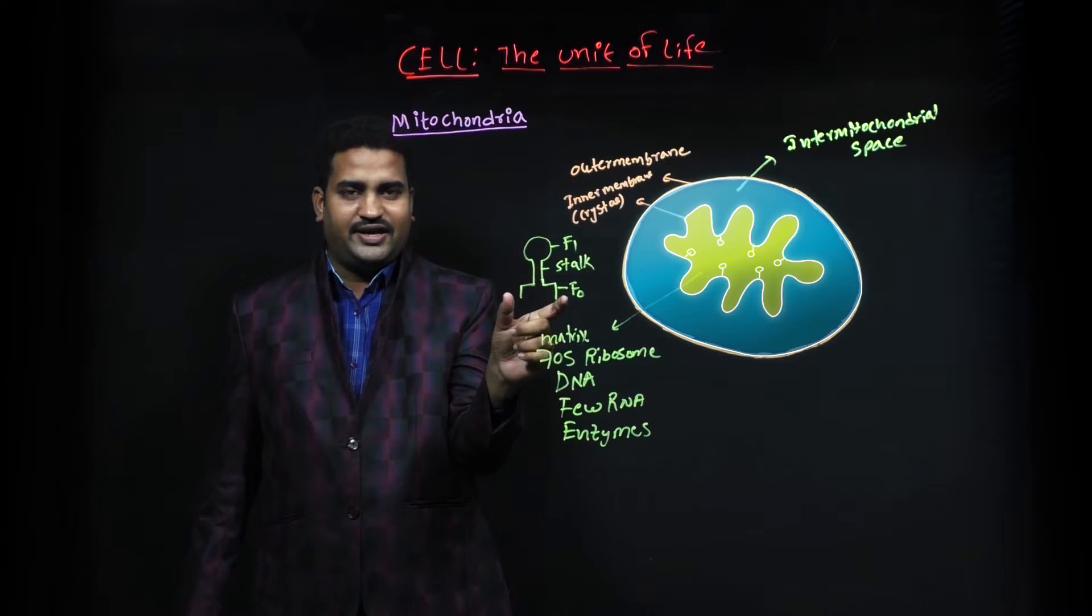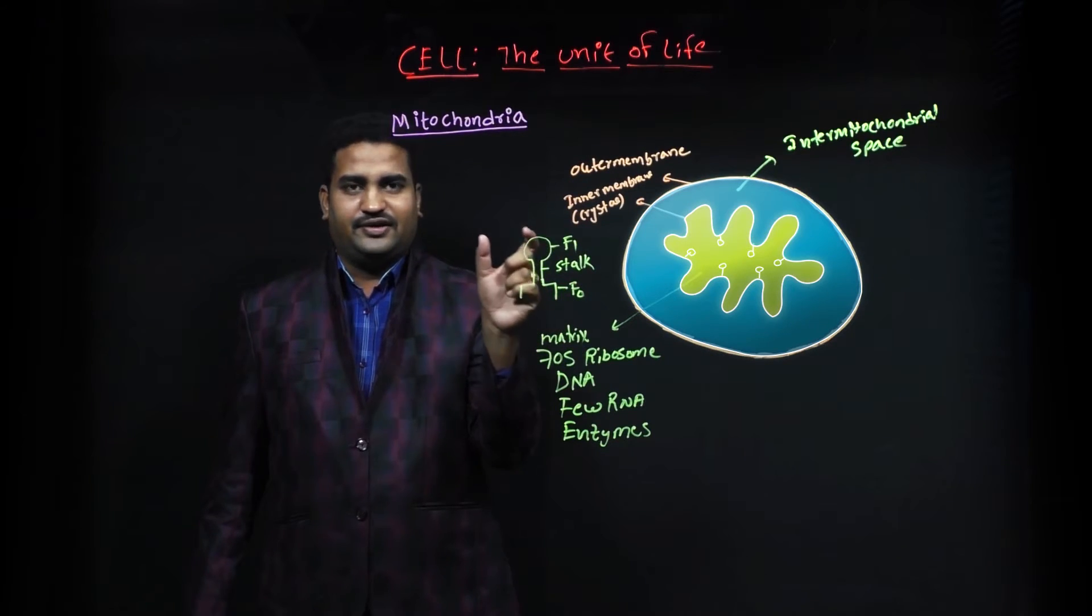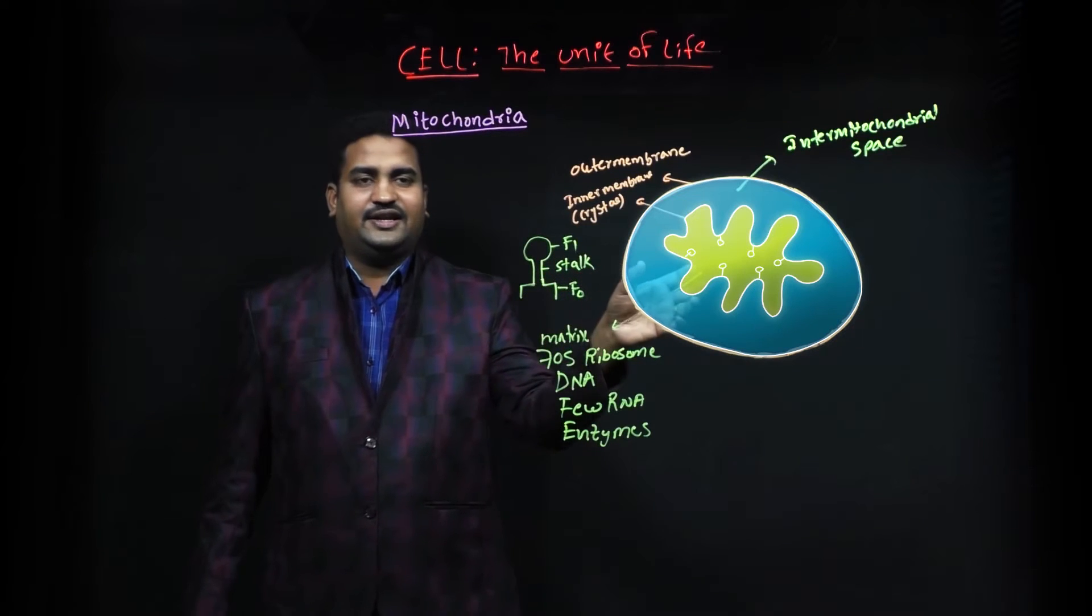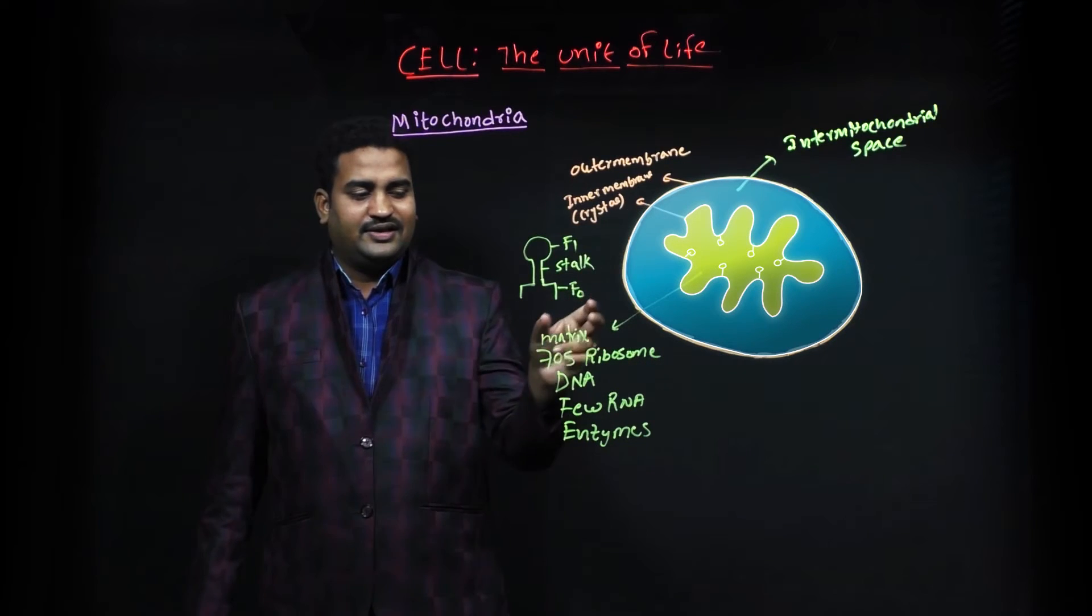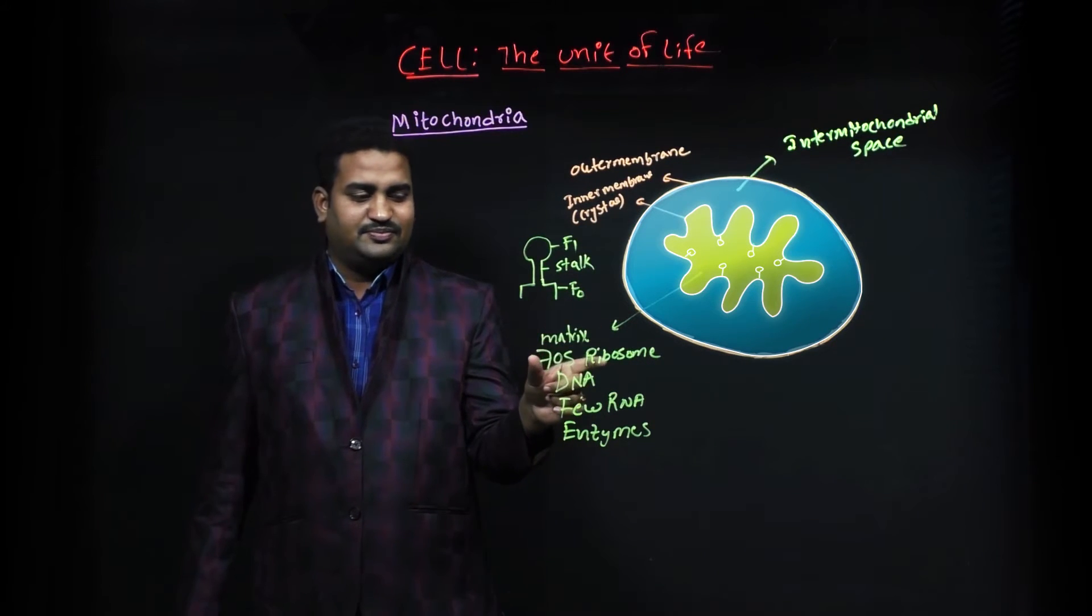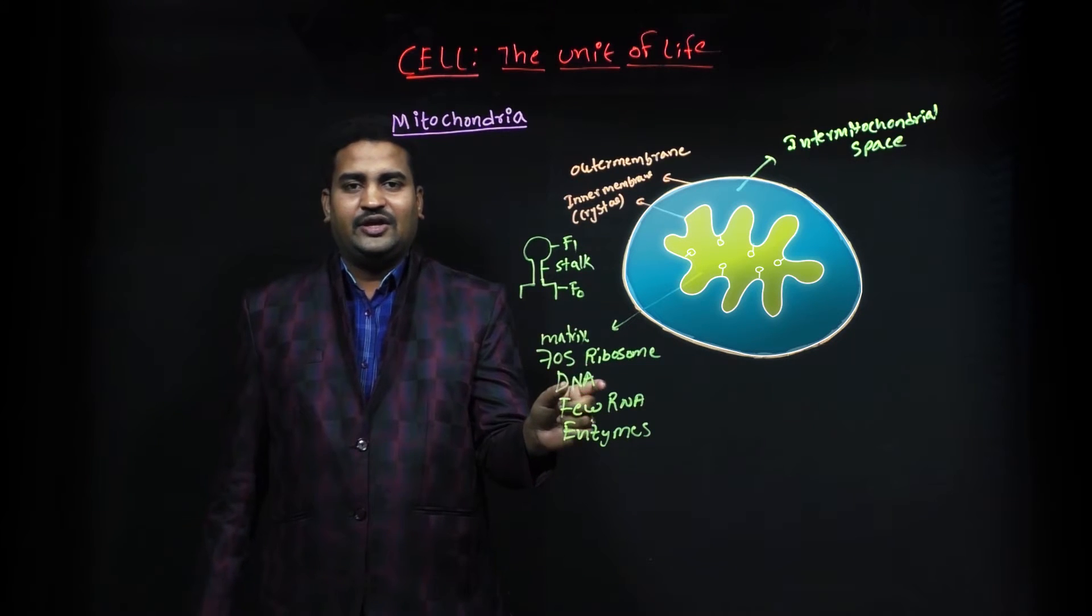It consists of a base, also known as F0, stalk, and F1. This base is integrated in the inner membrane. The space inner to the inner membrane is called the matrix. This matrix contains 70s ribosome, DNA, few RNA, and enzymes required for respiration.